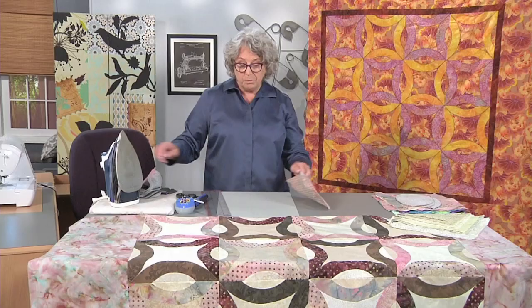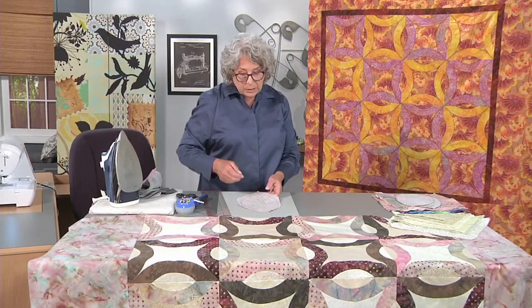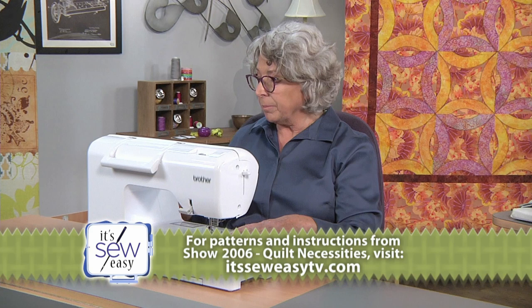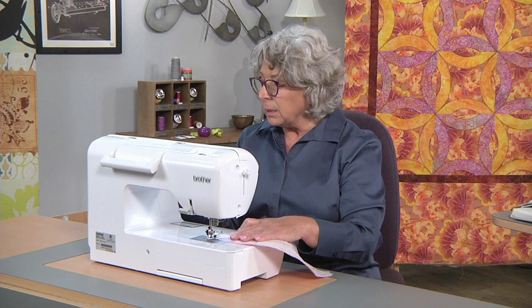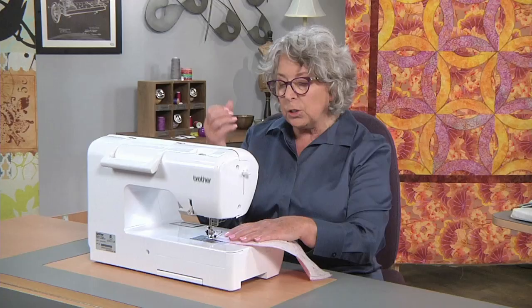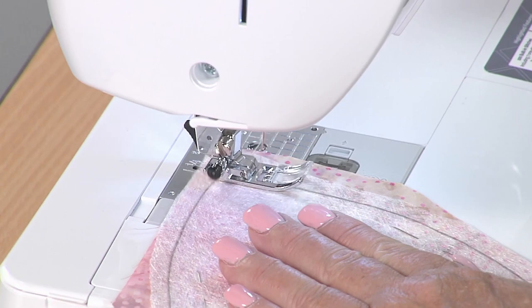Then, we're going to go over to the machine and we're going to sew from point to point and back to the first point. Don't leave any openings. Don't worry about the points too much. So I'm going to go over to the machine now. I'm going to select a straight stitch and I'm going to shorten that stitch just a little bit.